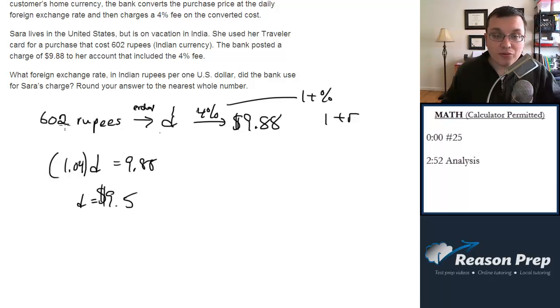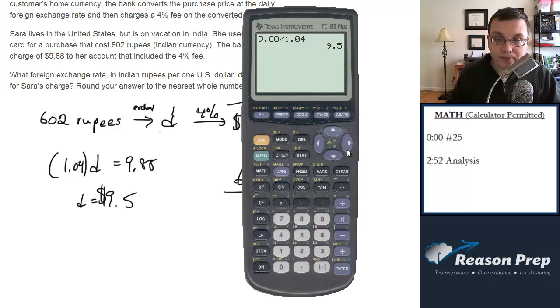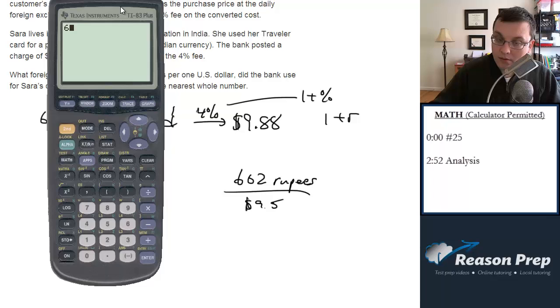So $9.50. Now this is the rupees. This is the dollar conversion of the 602 rupees, so we want to know how many rupees per dollar. So all we really need to do is say, okay, it's 602 rupees over $9.50. So we'll divide this and we'll get a unit of rupees per dollar.